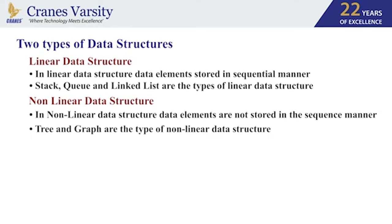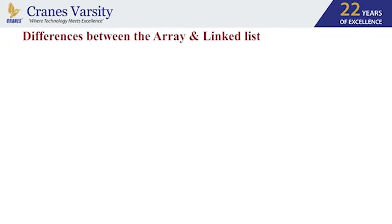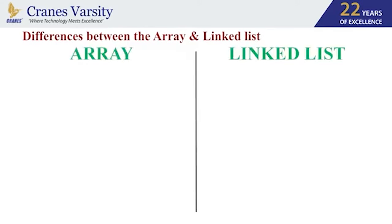Additionally, linear data structure is also called a static data structure, and non-linear data structure is also called a dynamic data structure. Now let's move on to what is linked list. A linked list is a linear data structure in which elements are not stored at contiguous memory locations; the elements in a linked list are linked using pointers. Before moving on in depth, let us first understand the difference between arrays and linked list.